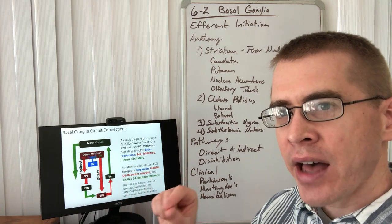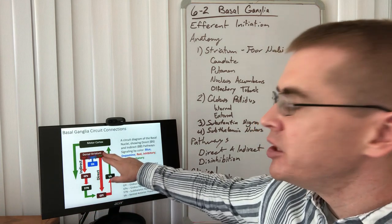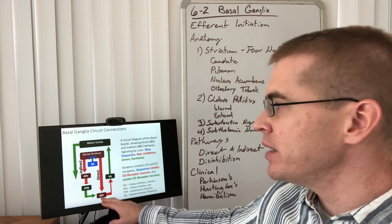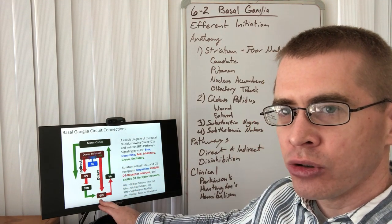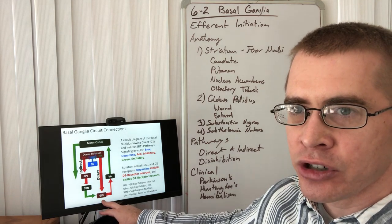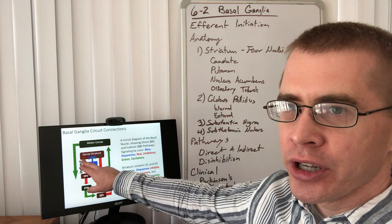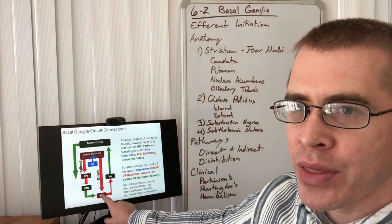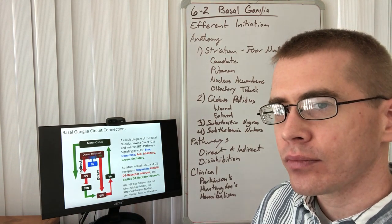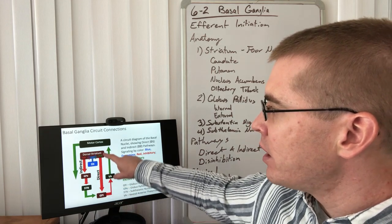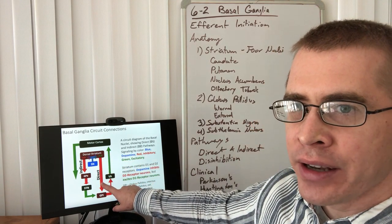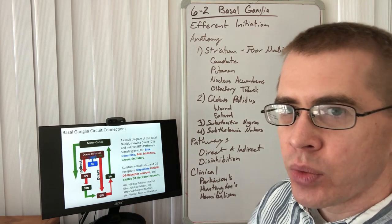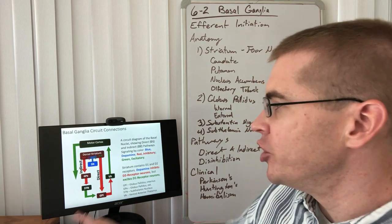The dorsal striatum has these two different populations. The D1 population of neurons is part of the direct pathway because it has projections directly to the GPi, the globus pallidus internus. When the direct pathway is activated, the D1 neurons release inhibitory neurotransmitter on the GPi, so GPI is inhibited.